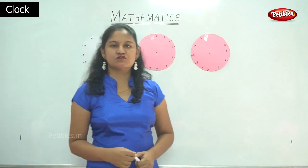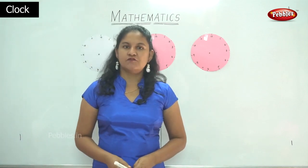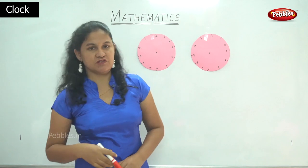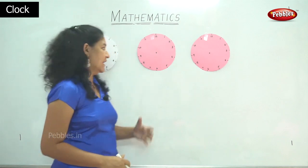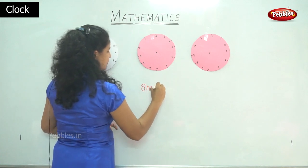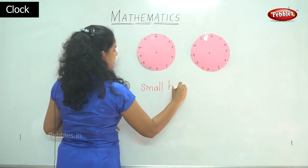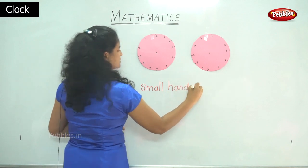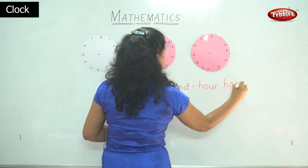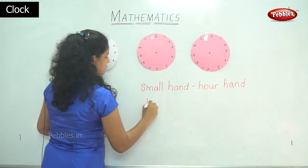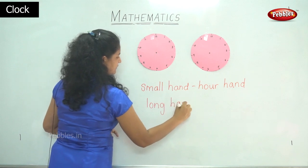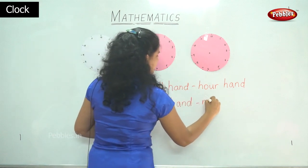Today we will be seeing how to draw the hands of the clock for three different timings. I have three clocks put up on the board, three models of the clocks with the numbers written. I am going to draw the small hand, or the hour hand, which shows us the hour, and the long hand, or the minute hand, which shows us the minute.